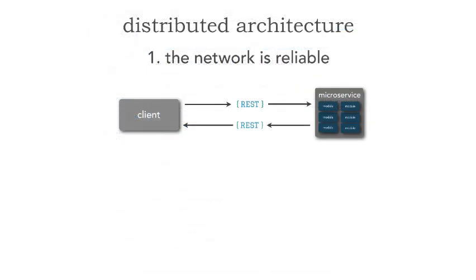The first fallacy of distributed computing is the assumption we make that the network is, in fact, reliable — that we don't have to worry about network issues. Of course, nothing could be further from the truth. Networks are more reliable than they were before, but they're still not fully reliable. We sometimes have trouble reaching a particular microservice, or once we've reached that microservice, we're not getting a response back. It could be due to an error in that service itself, or it could be due to a network failure.